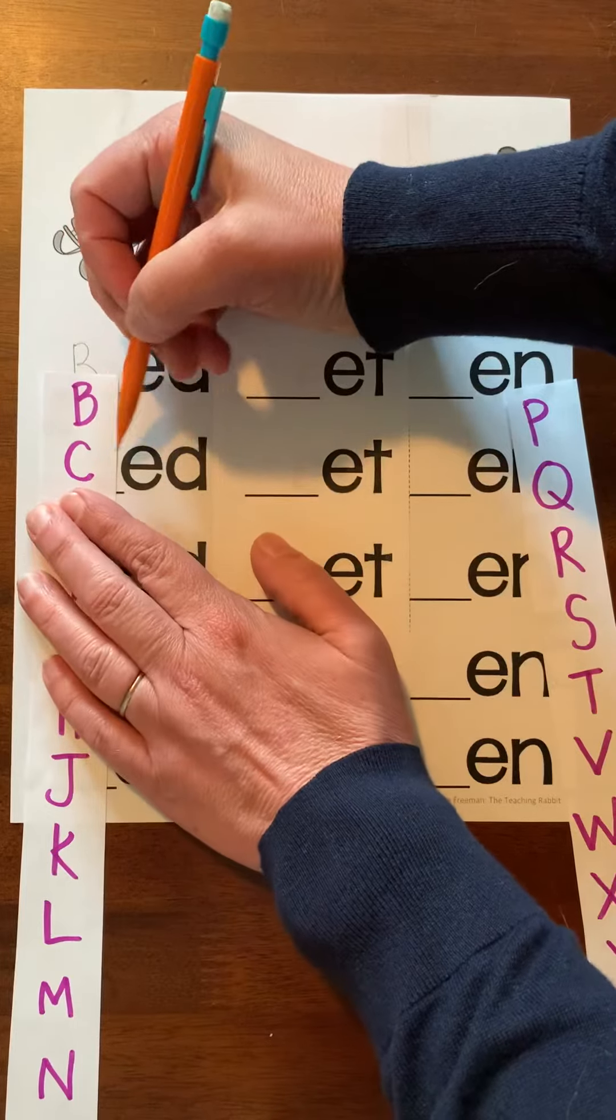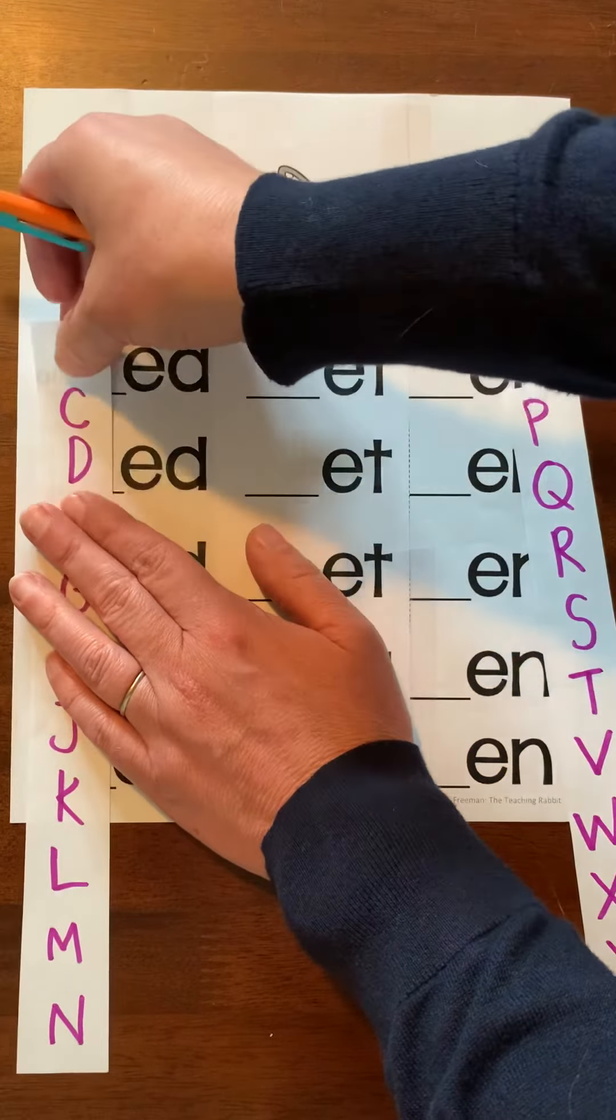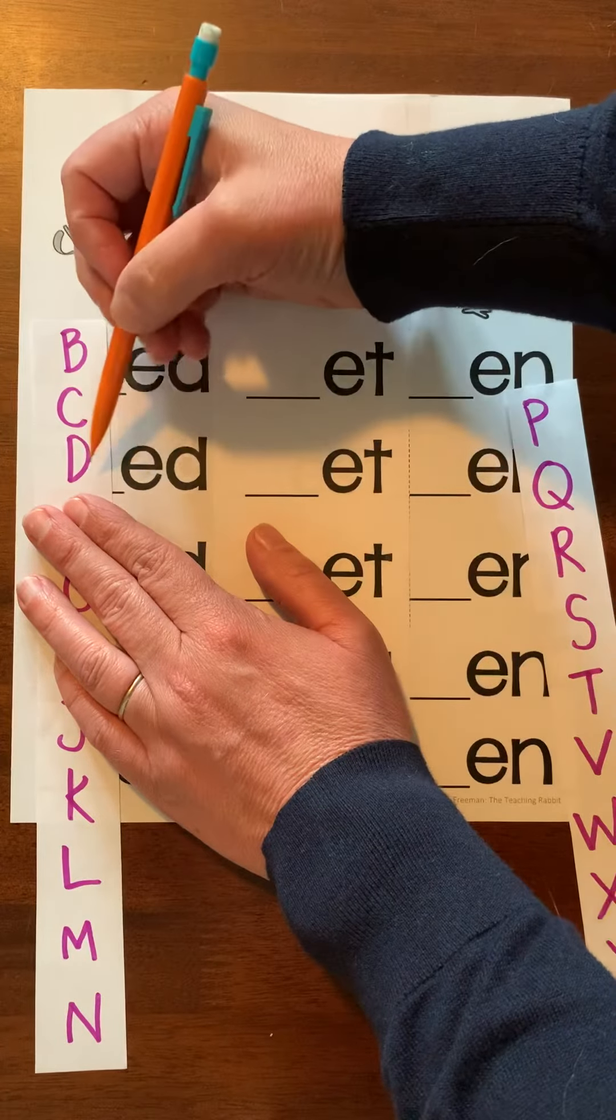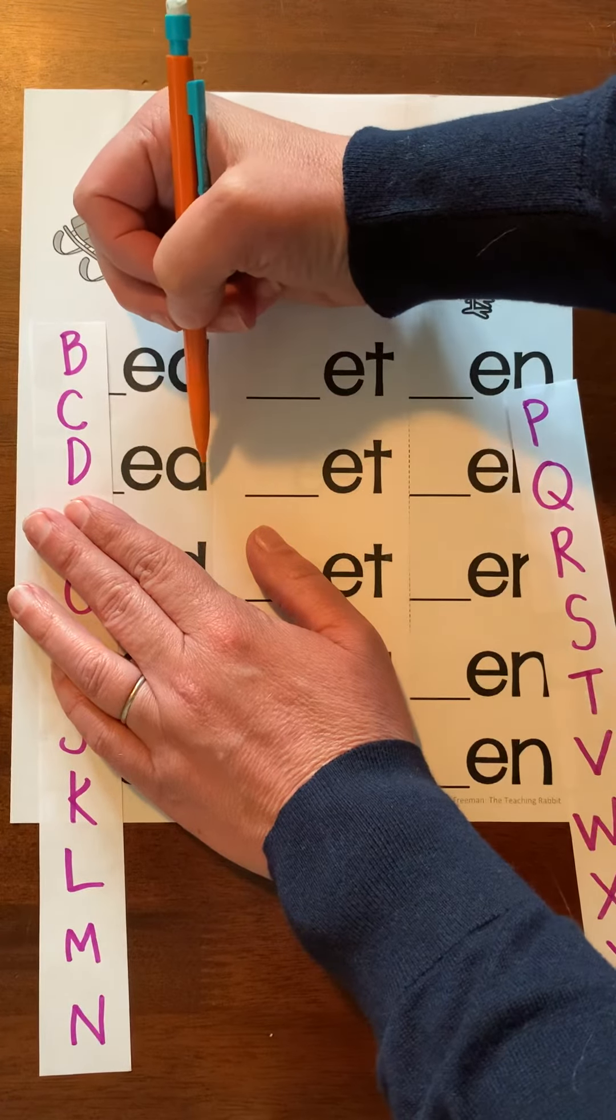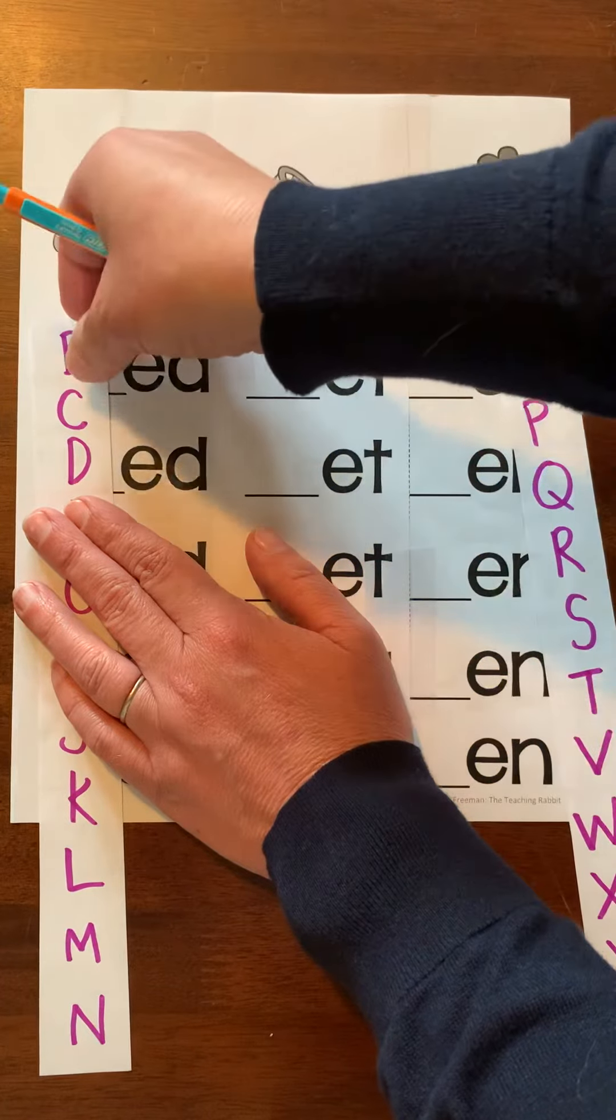C-ed. No, that's not a word. D-ed, ded. Well, dead is a word, but I'm going to tell you this isn't how you spell dead. Tricky English language. Let's keep going.